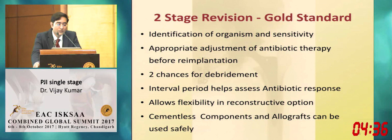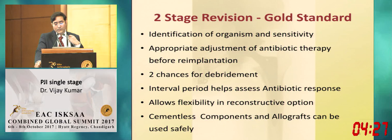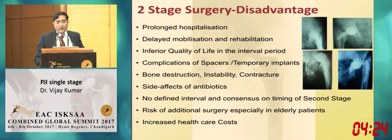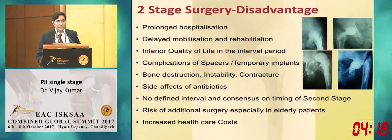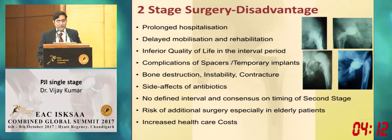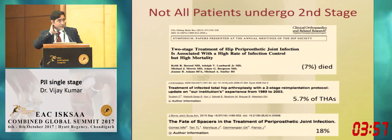The gold standard has been two-stage revision because it helps identify the organism, gives antibiotic sensitivity, two chances for debridement, helps assess antibiotic response, and aids planning of revision surgery. Disadvantages include two surgeries, an interval period with inferior quality of life, complications of spacers such as dislocation and contracture, additional surgical risk, increased healthcare costs, and the fact that not all patients undergo the second stage — Parvizi found around 18% never underwent second surgery due to unfitness or death.